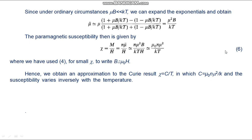Hence we obtain an approximation to the Curie result: χ equals C divided by T, in which C equals μ_0·N·μ squared divided by k, and the susceptibility varies inversely with temperature.